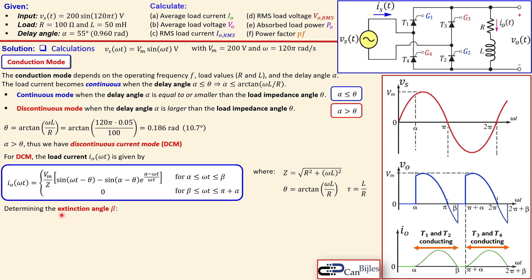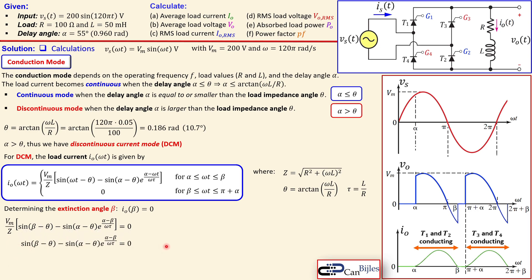We also need to determine the extinction angle β. We know α is given, but β is unknown. Since the load current is zero at both α and β, we set the current expression equal to zero at ωt = β. Dividing out Vm/Z gives a transcendental equation in β. Using a numerical solver with known values of ω, τ, α, and θ, we can solve for β in radians.